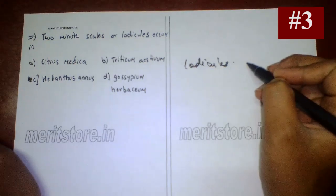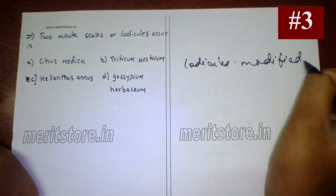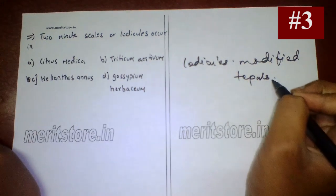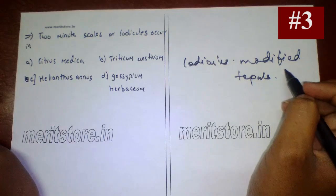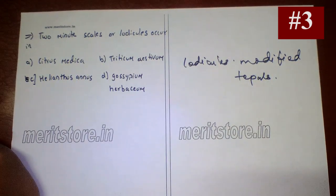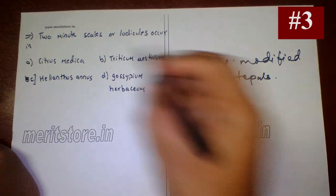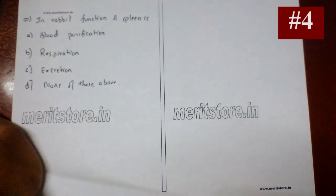Lodicules occur in — they are modified perianth. Two perianth, polyphyllous, small hyaline membranous antero-lateral scales called lodicules; they are hairy or smooth, whitish, and inferior. They occur in Triticum aestivum. So option B is the correct answer.